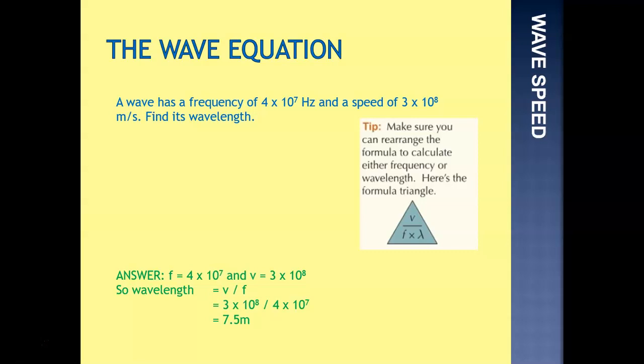In this case, speed is 3 times 10 to the 8, that's standard form, that's 3 with 8 zeros after it, and the frequency is 4 times 10 to the 7, standard form, 4 with 7 zeros after it. So that would be 3 times 10 to the 8 divided by 4 times 10 to the 7, gives us a final answer of 7.5 meters.